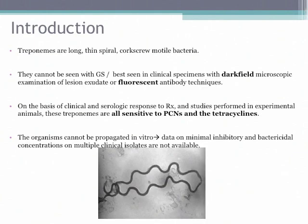A few words about the treponemes — the slides are a little off. Treponemes are basically long and thin spirals, known for their corkscrew motility. They're too tiny to be seen by Gram stain, which is why we use dark field microscopy and fluorescent antibody techniques. They're all susceptible to penicillin and tetracycline, based on clinical and serological responses — for example, trending the RPR — and based on a few studies done in experimental animals.